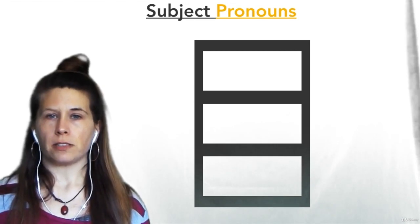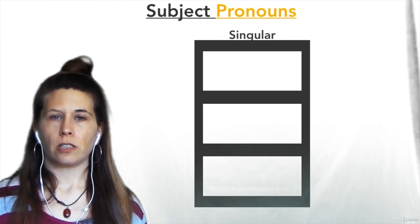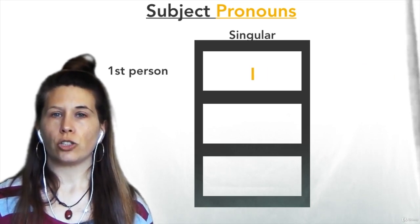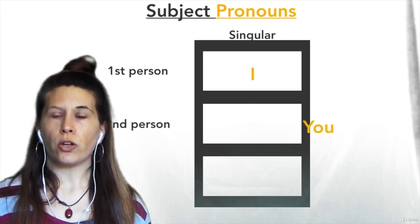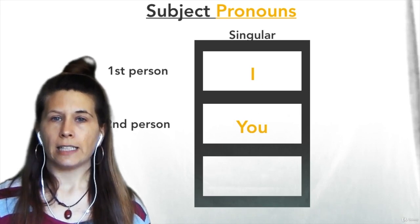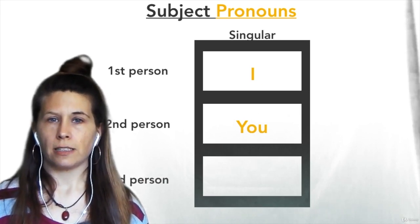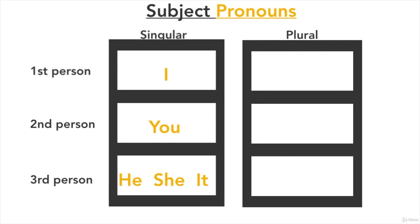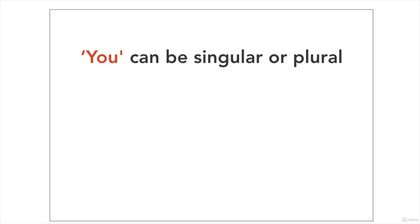Subject pronouns. Singular: first person — I; second person — you; third person — he, she, or it. Plural: first person — we; second person — you; third person — they. Remember, you can be singular or plural.